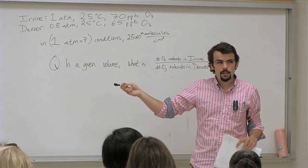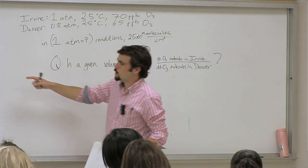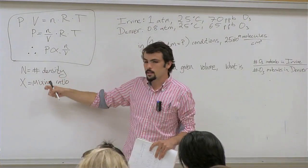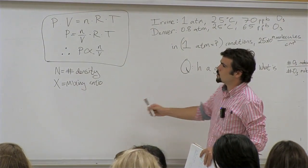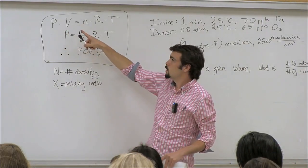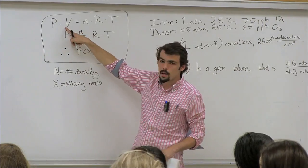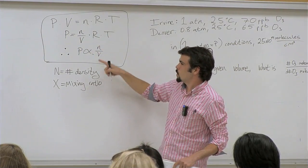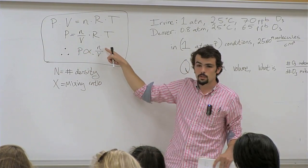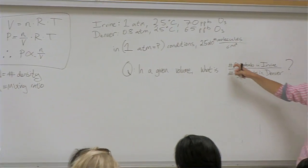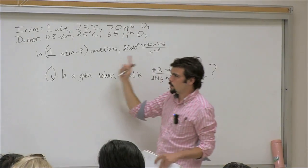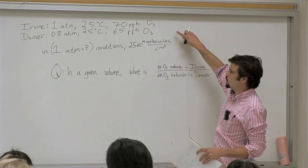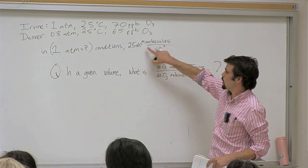There are two main concepts here. First is the proportionality of pressure to moles per volume, and second is number densities and mixing ratios. From the ideal gas law, PV = nRT, rearranging gives P = (n/V)·R·T, which shows pressure is proportional to moles per volume. Moles per volume is essentially the same as molecules per volume — there are 6.023×10²³ molecules per mole. So at 1 ATM, there are 2.5×10¹⁹ molecules per cm³.